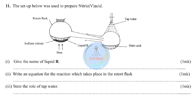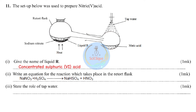Question eleven: the setup was used to prepare nitric acid. Liquid R is concentrated sulfuric acid — it reacts with sodium nitrate to form sodium hydrogen sulfate and nitric acid. Sodium and potassium nitrates are preferred because they form soluble sulfates. The acidic salt sodium hydrogen sulfate is formed instead of sodium sulfate because producing the normal salt requires extremely high temperatures unsafe for a standard school lab.